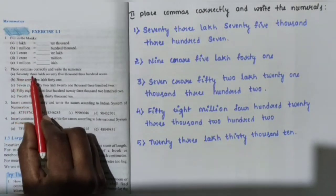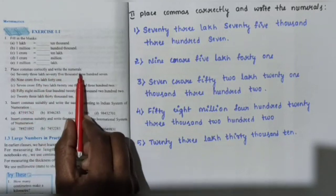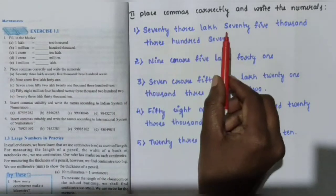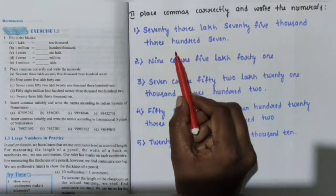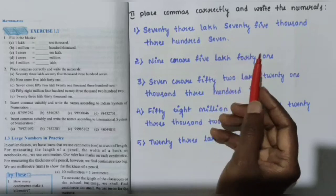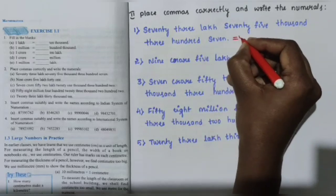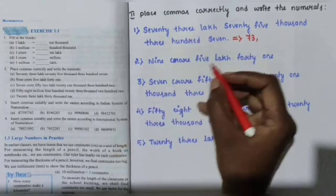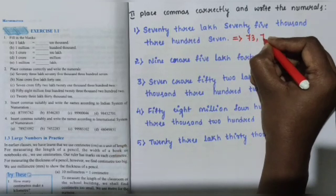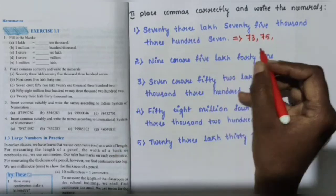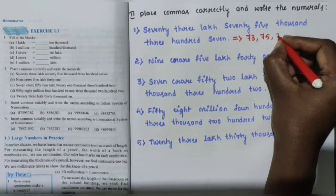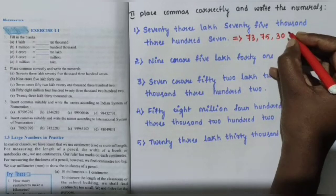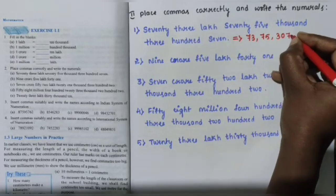Coming to section B: place commas correctly and write the numerals. Question number 1: seventy-three lakh seventy-five thousand three hundred and seven — written as 73,75,307. The tens place is 0, so the number is 73,75,307.